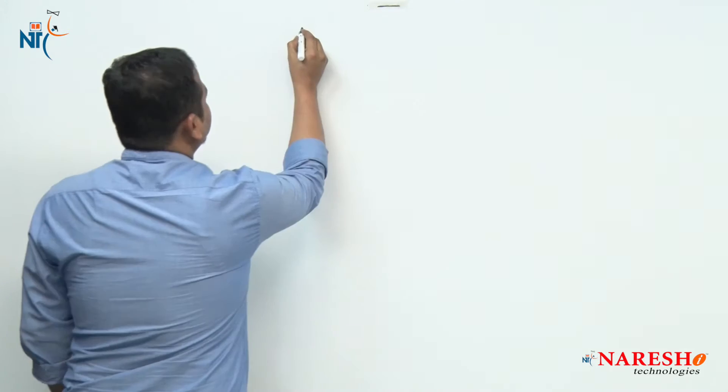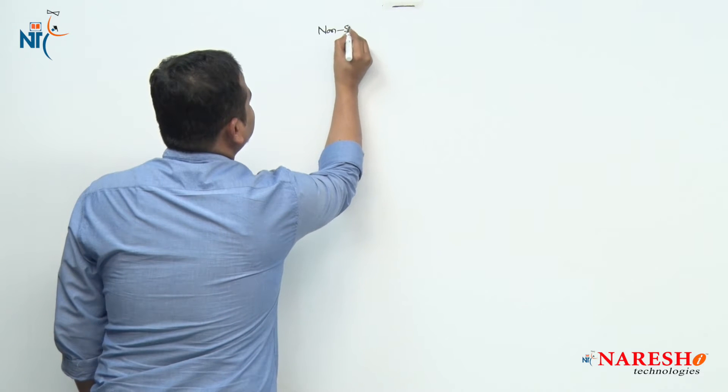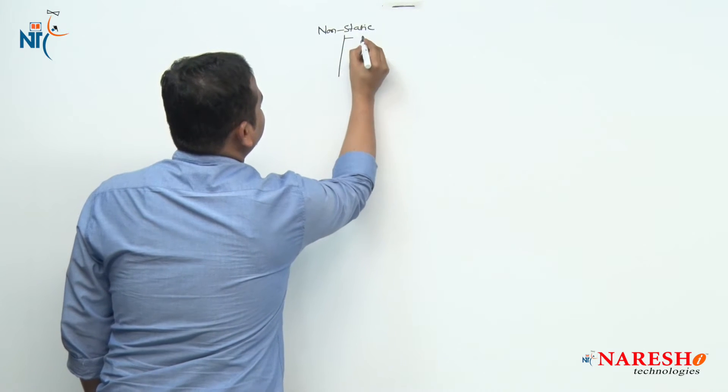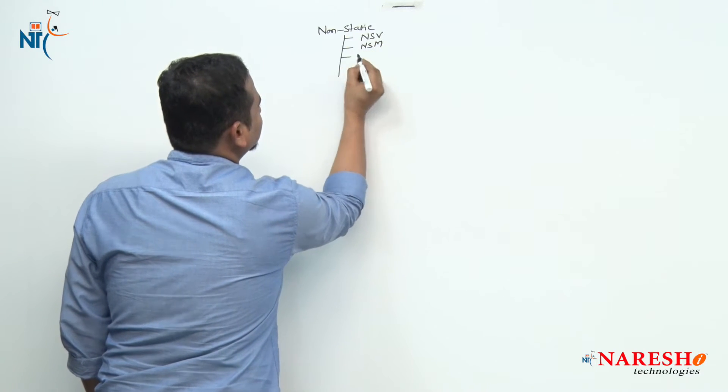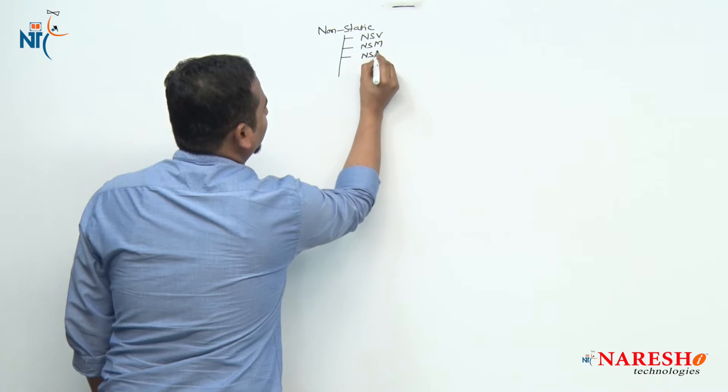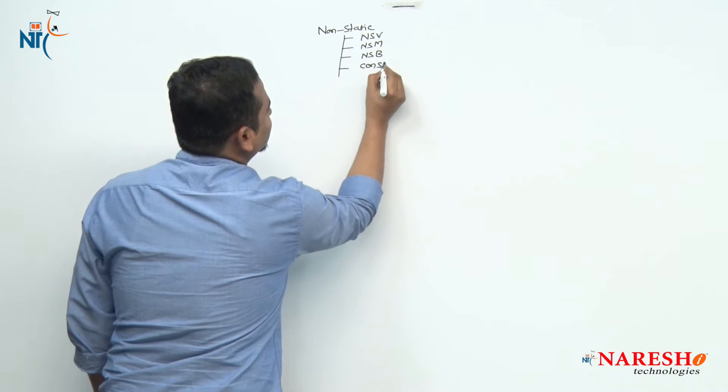Let me highlight how many types of non-static data we have in Java. Non-static data means instance data — we can also call it instance programming elements. Non-static programming elements or data are mainly classified into: non-static variables, non-static methods, non-static blocks, and constructors.